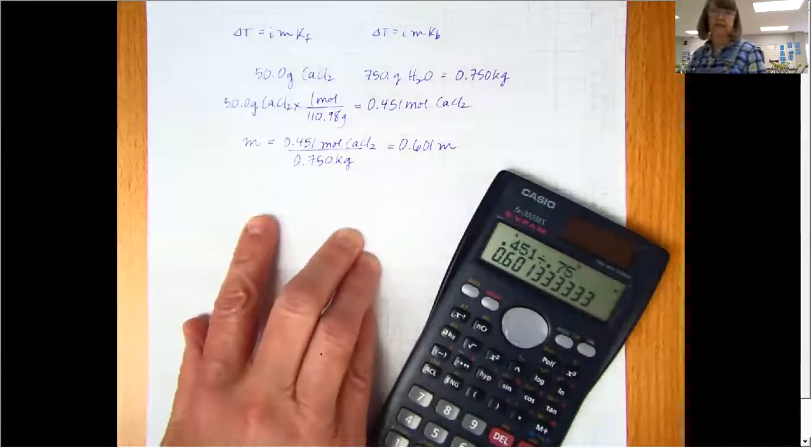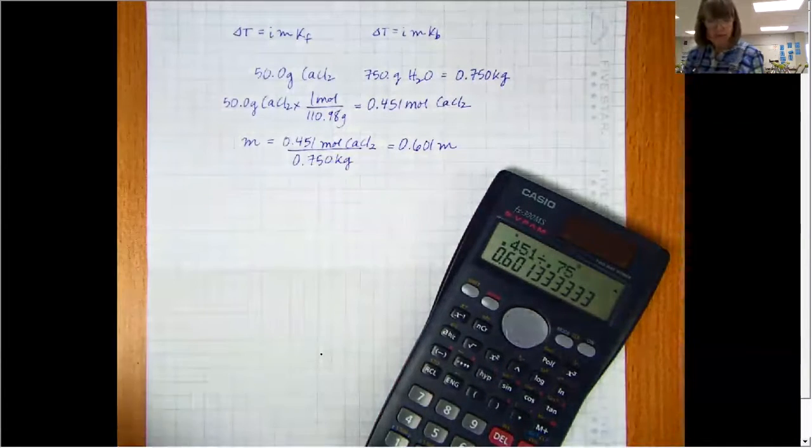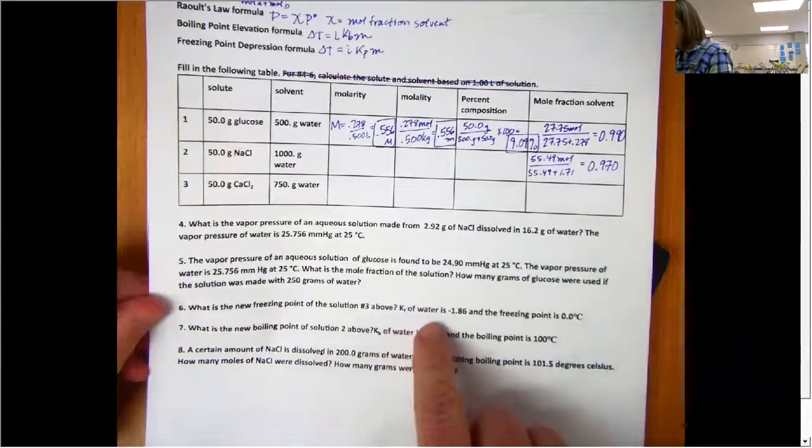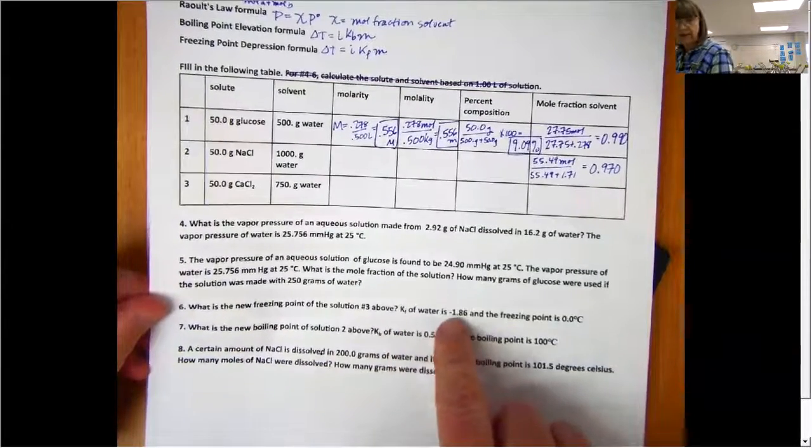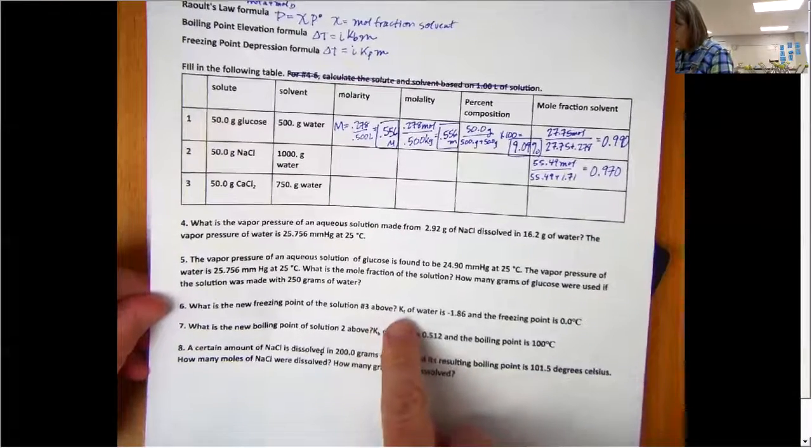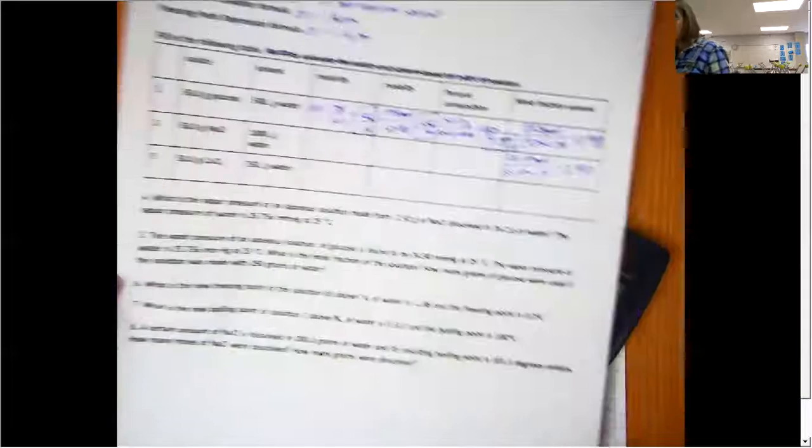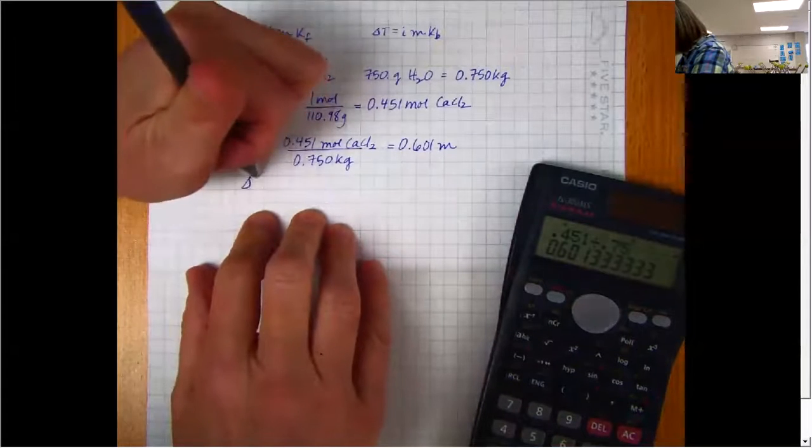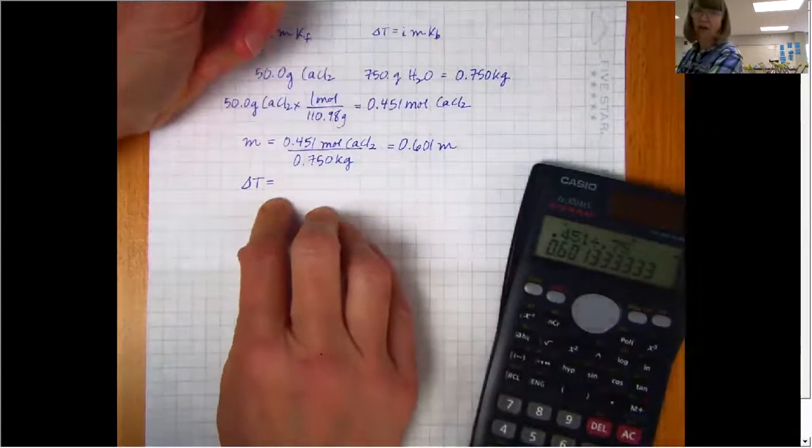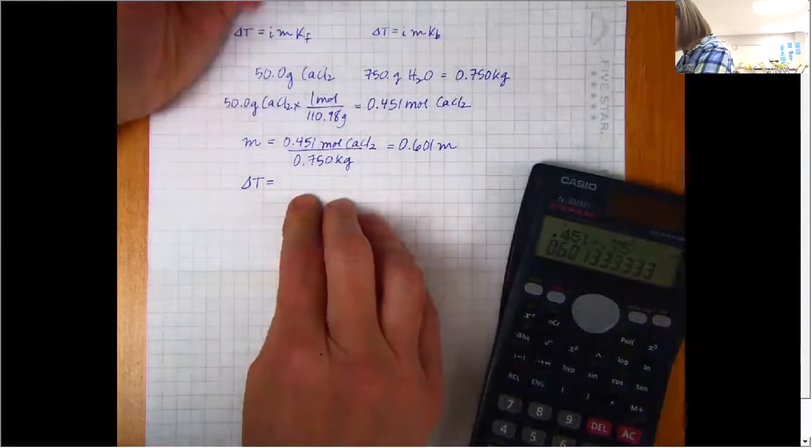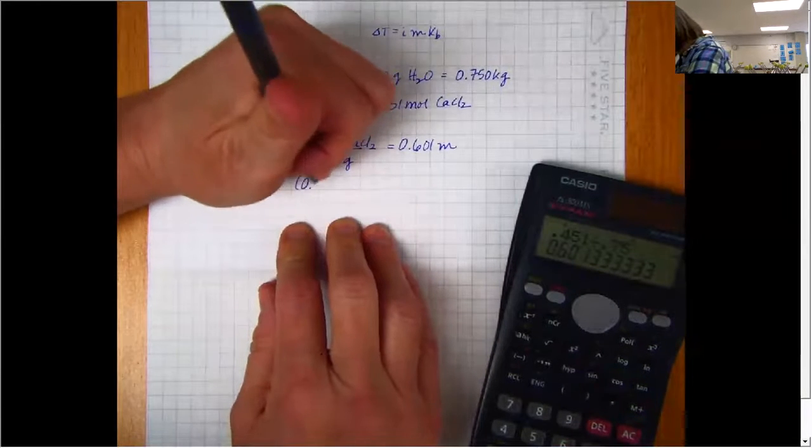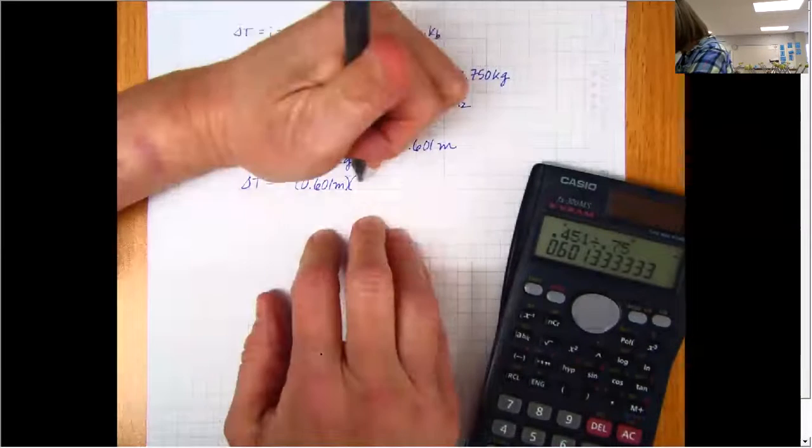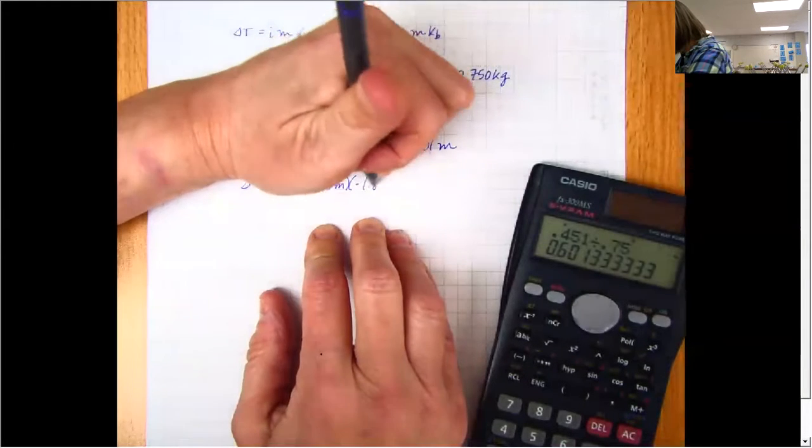And now I am ready to start putting numbers into the problem. So number six, we are doing a new freezing point, so I know that my freezing point constant for water is negative 1.86. So my change in temperature is going to be my Van't Hoff number, I'll leave room for that, times my molality, times my freezing point constant, which I'm given is negative 1.86.